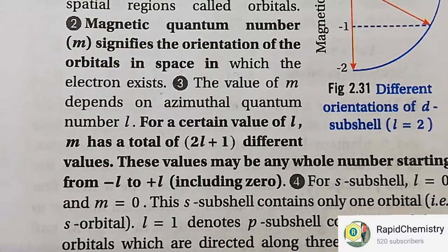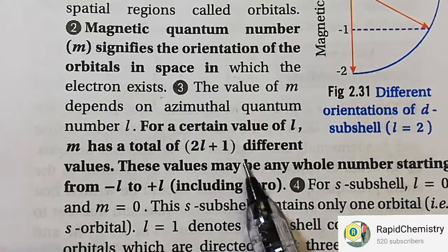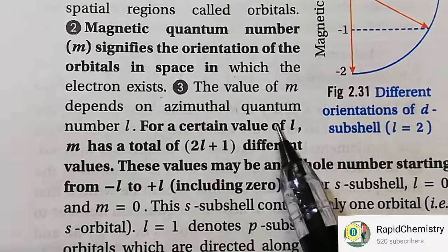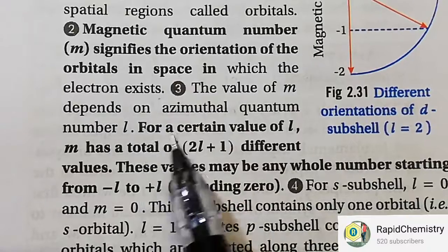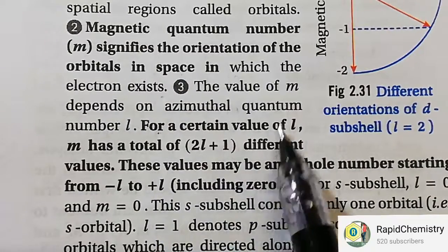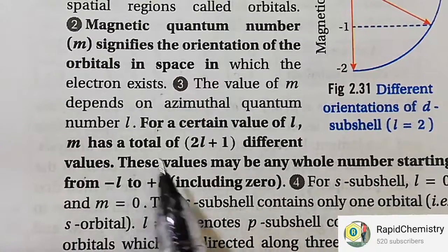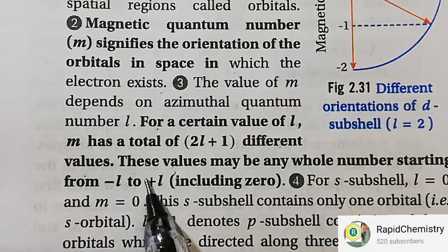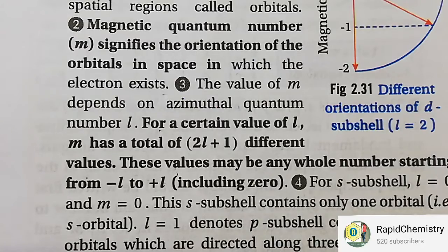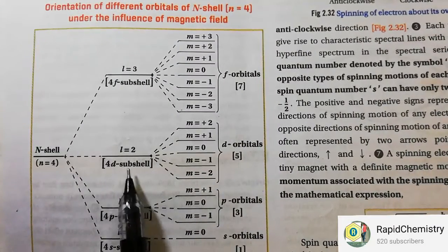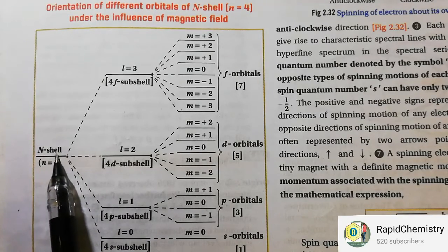For each value of L, the magnetic quantum number M has a total of 2L plus 1 different values, starting from minus L to plus L, including 0. For example, for the fourth shell from the nucleus — the N shell — where N equals 4, the azimuthal quantum number values are 0, 1, 2, 3, giving subshells 4S, 4P, 4D, and 4F.